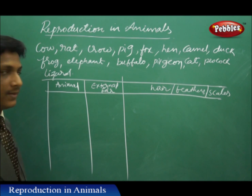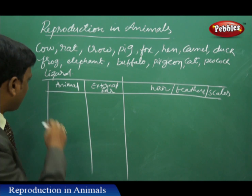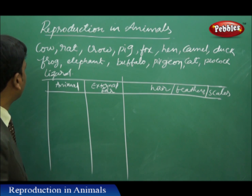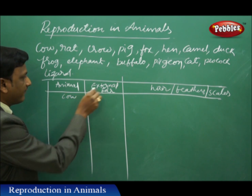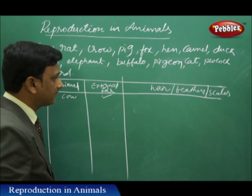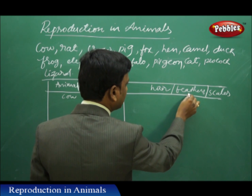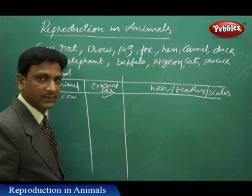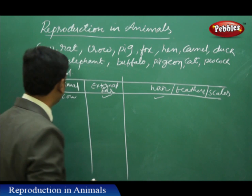Now here we have one more set of animals and we are going to compare one more external feature of animals. Let us take the cow — whether it has external ear or not. Yes, it has external ear. Does it have hair or feathers or scales on its body? The cows will have hair on their bodies.